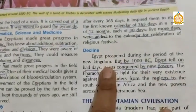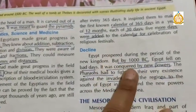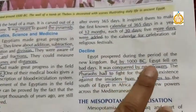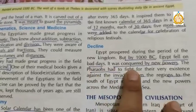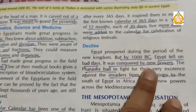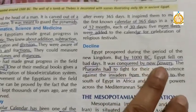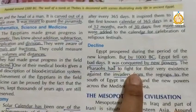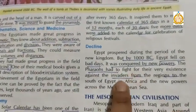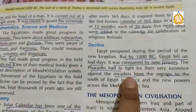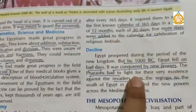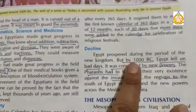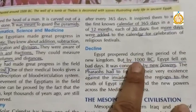The next topic is the decline of the Egyptian civilization. By 1000 BC, Egypt fell on bad days because it was captured by new powers. Egypt was attacked by invaders, and the Egyptian civilization declined by 1000 BC.